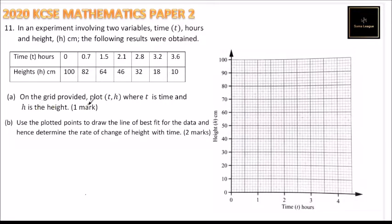On the grid provided plot t, h, where t is time and h is height, and you get one mark. Use the plotted points to draw the best line of fit for the data and hence determine the rate of change of height with time.